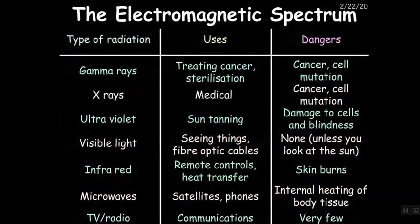So what are the types and uses? Gamma rays are useful for treating cancer and sterilization of things like food, but they can cause cancer and cell mutation. X-rays are used in the medical industry but they can also cause cancer and cell mutation due to the fact that both of them have very high frequencies. Ultraviolet is used for sun tanning but the problem is that it does damage your skin, so sunburn, and if you get exposure to ultraviolet light in your eyes it can damage your eyes and cause blindness.